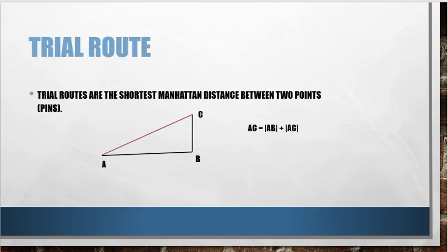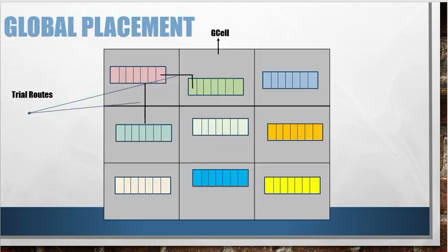Let's understand trial routing in a little more detail. Trial routes are the shortest Manhattan distance between two points. So in our case, two pins, because we have to route between two pins of standard cells. So for example, if we want to calculate the distance between A and C, then according to the Manhattan distance, AC will be calculated as absolute AB distance plus absolute BC distance. So if we have to route from pin A to pin C, we will go like this: AB then BC. So as you can see here, if we have to route from this pin to this pin, we will go like this, because this will be the shortest Manhattan distance.